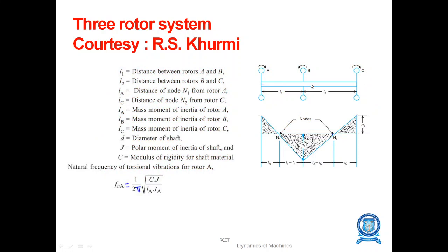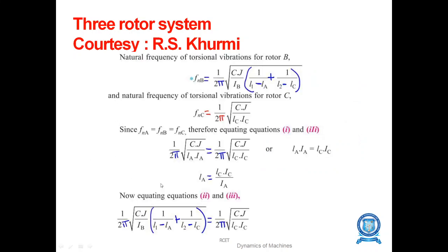Take the diagram, draw the values and take L1, L2, total length LA. LA becomes 0.2 n1, LC n2 to last point and the frequency becomes 1 by 2π root of CJ by IA LA.